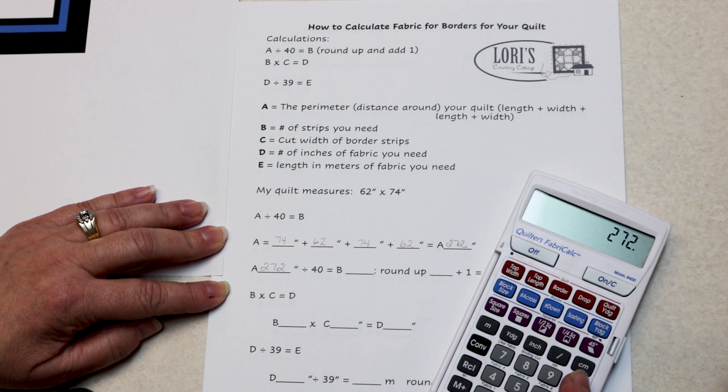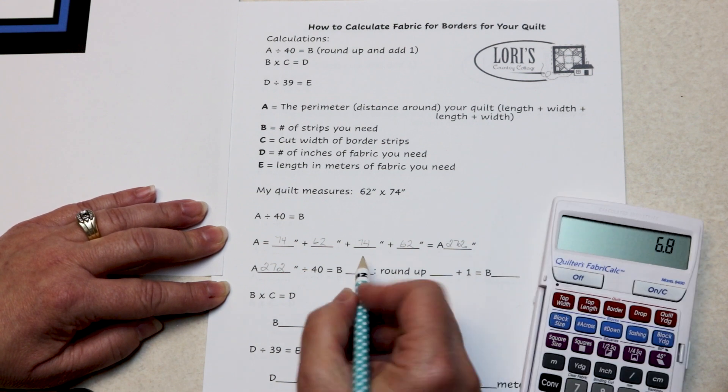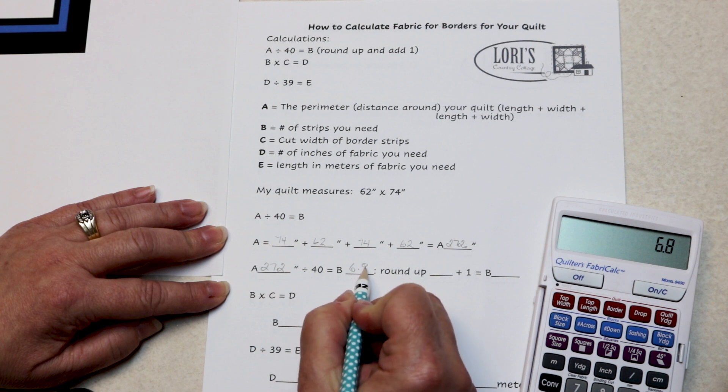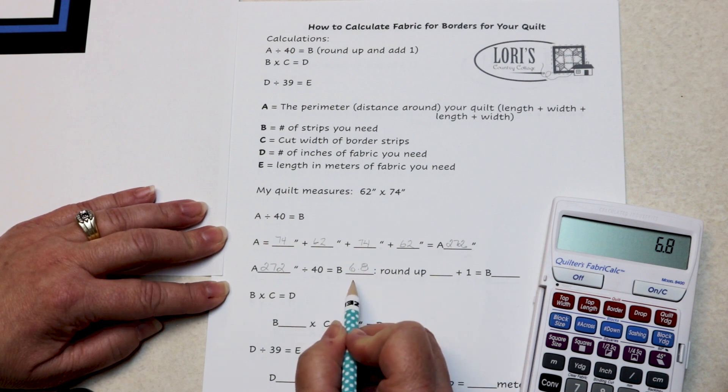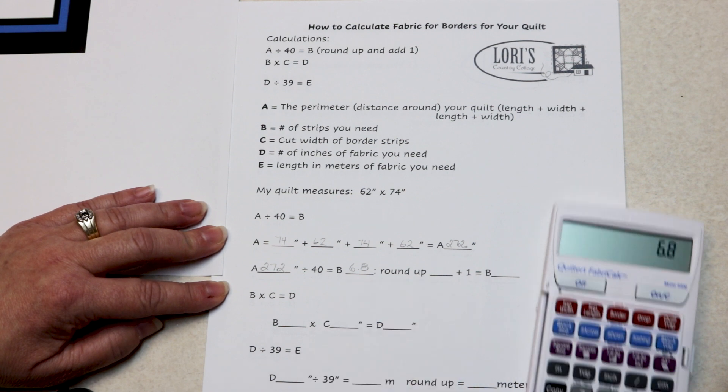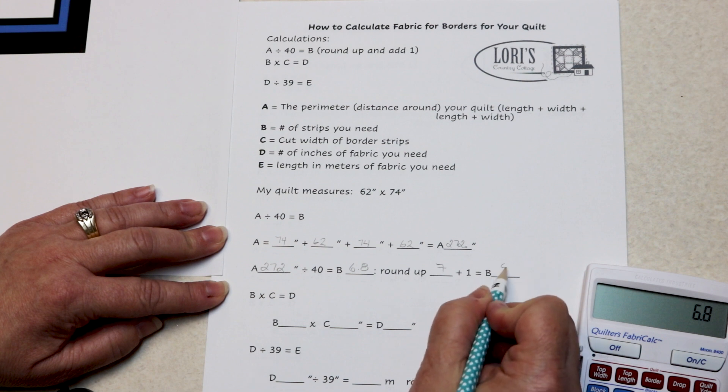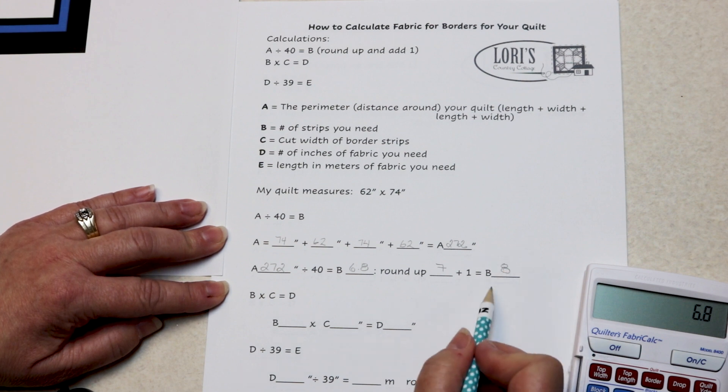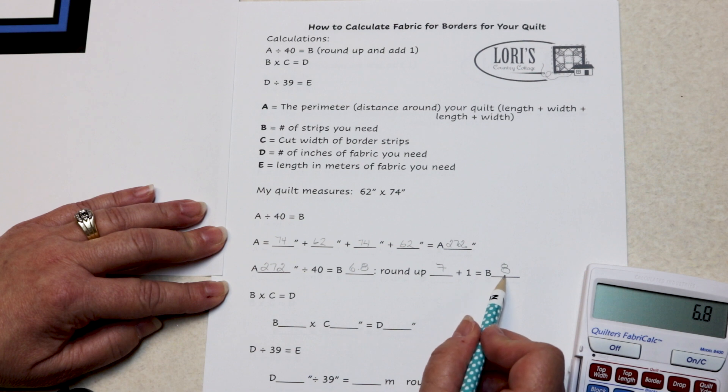So 272 divided by 40 tells us how many strips we need for this border. We need 6.8. Well, you can't buy 6.8 strips. We're going to round up to seven and add one is eight. Why do I add one? Well, if my ruler slips, I have one extra strip and some extra fabric to play with. B equals eight.